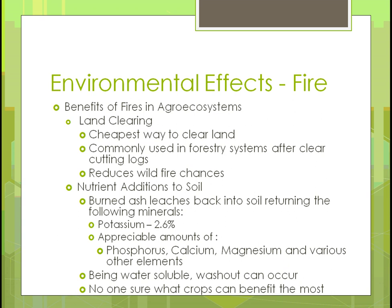For nutrient additions to the soil, burned ash leaches back into the soil, returning potassium at a rate of about 2.6%. Appreciable amounts of phosphorus, calcium, magnesium, and some other trace elements would be put back into the soil. Being water soluble, washout can occur, so there is a possibility of leaching of some of these elements. No one is really totally sure which crops would benefit the most; there hasn't been enough research to know that.